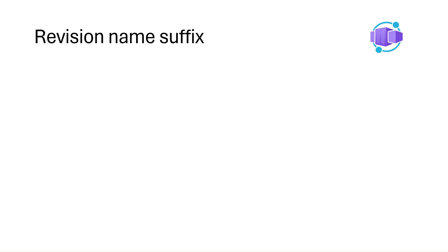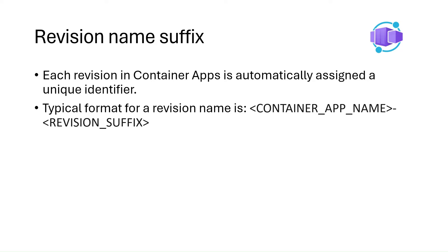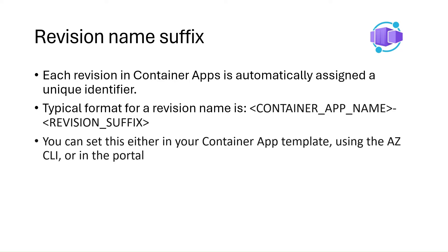We can also use suffixes for our revision names. Each revision in Azure Container Apps is automatically assigned a unique identifier, but you can personalize this by customizing the revision suffix. When choosing a suffix name, use only lowercase alphanumeric characters or dashes, start with an alphabetic character, and end with an alphanumeric character. You can set the revision suffix in your Azure resource manager template, through the Azure CLI using commands like az container app create and az container app update, or when creating a revision via the Azure portal. Customizing revision names makes it easier to manage and identify different versions of your container apps.